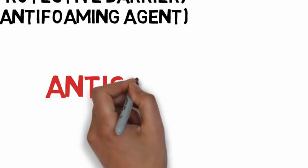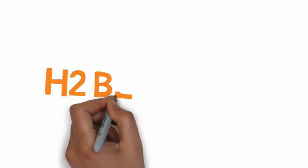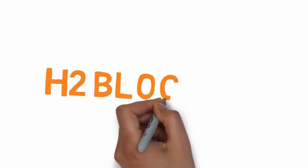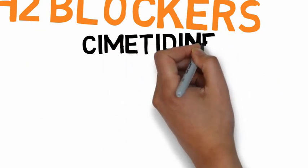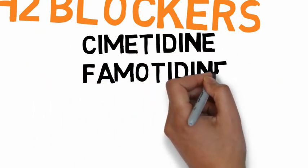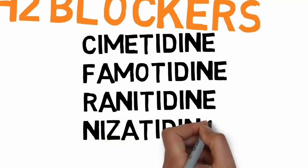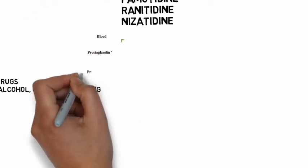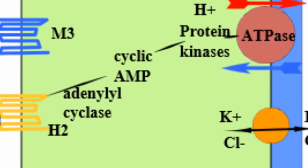Another approach to reduce gastric acidity is by inhibiting gastric acid secretion with a histamine H2 receptor antagonist or a proton pump inhibitor (PPI). The H2 receptor antagonists, or H2 blockers, include cimetidine, famotidine, ranitidine and nizatidine. The structure of H2 blockers is similar to that of histamine, enabling the drugs to compete with histamine for binding to H2 receptors on gastric parietal cells and inhibit histamine-mediated acid secretion.